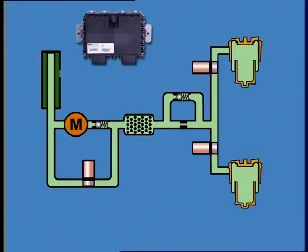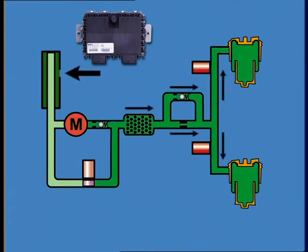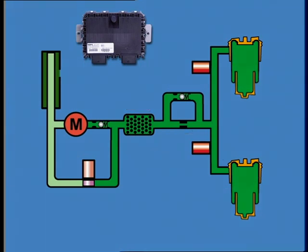To raise the body height, the ECU activates the compressor, then opens the air spring solenoids until the nominal body height is reached. The air reserve, if present, is not used for this operation.